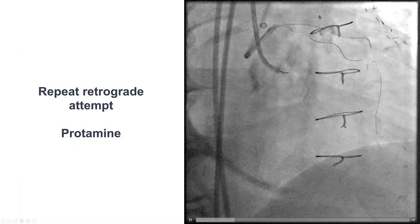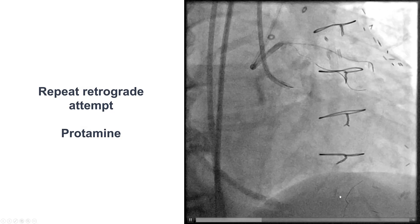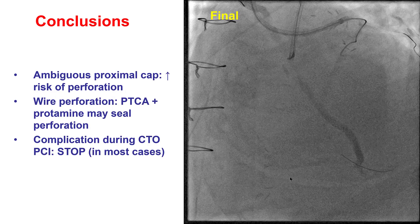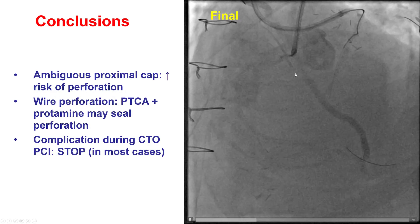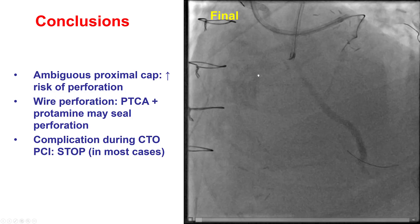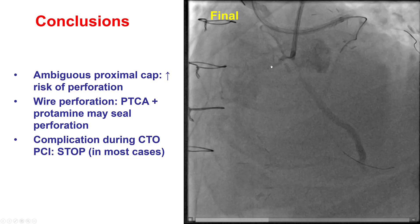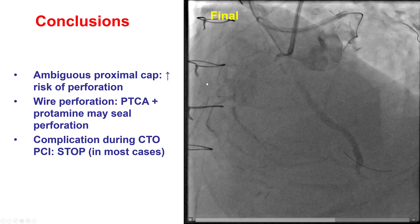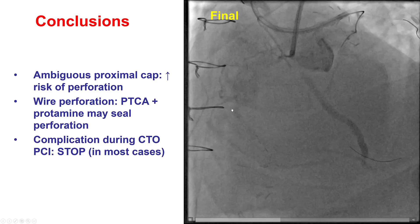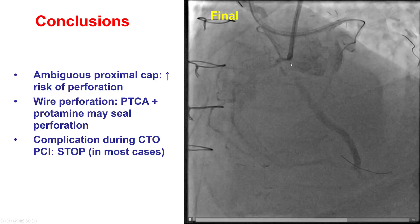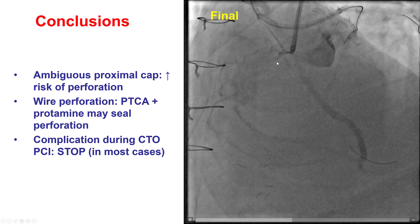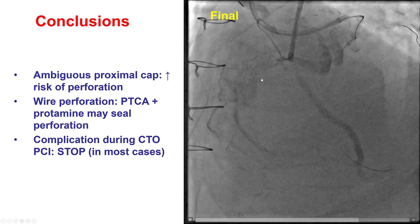We did a brief retrograde attempt again in case we were able to advance a guide wire into the PDA, but unfortunately this was not successful. Fortunately, after a few minutes and after echo did not show any effusion, we had a spontaneous sealing of the perforation, so we removed the equipment and administered protamine. Echo again did not show any effusion, but the challenge in patients with previous bypass is that loculated effusions may not be as apparent on echo as a free-floating pericardial effusion.